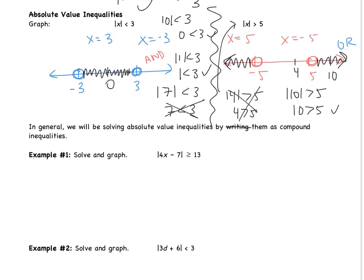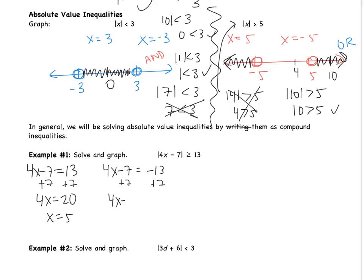Example 1: solve and graph. We're going to write two inequalities. The first looks just like the original: 4x minus 7 equals positive 13. The second has the number made negative: 4x minus 7 equals negative 13. Solving the first: add 7 to get 4x equals 20, divide by 4 to get x equals 5. Solving the second: add 7 to get 4x equals negative 6, divide by 4 to get negative 6 over 4, which simplifies to negative 3 over 2.